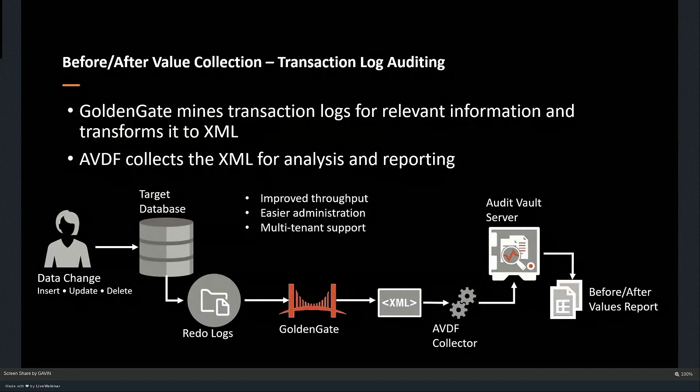If you're using Golden Gate, there is now a lot of integration between Golden Gate and AVDF. One of the targets for AVDF can be the transaction log, as well as the Golden Gate trail files. The before and after values of a certain row are stored in the Golden Gate trail file, and that can be viewed through AVDF via a simple report. I'm able to see for a particular row what was the before value, it was updated, and what's the after value — transaction log auditing.